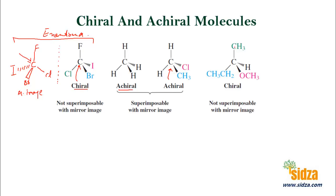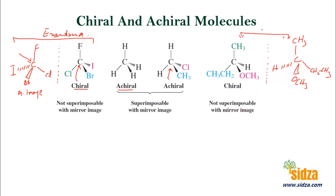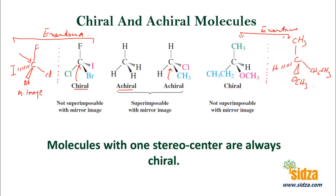Here is another molecule. This is not a chiral center, but this is the chiral center — because you have a carbon with four different groups attached to it. If you look at this molecule through the mirror, it will be non-superimposable on its mirror image. Molecules with one stereocenter are always chiral. So you have a molecule with one stereocenter here, one stereocenter here, one here, and one here — so these are chiral molecules.